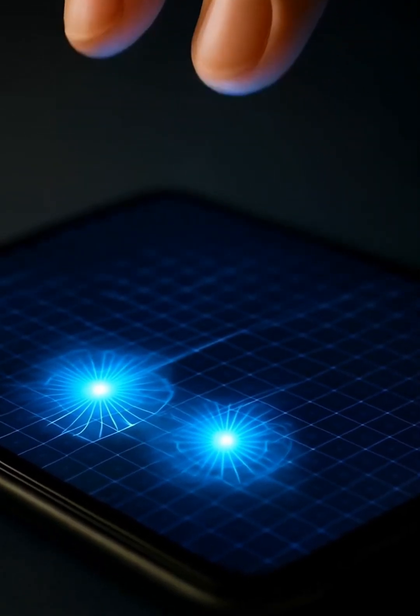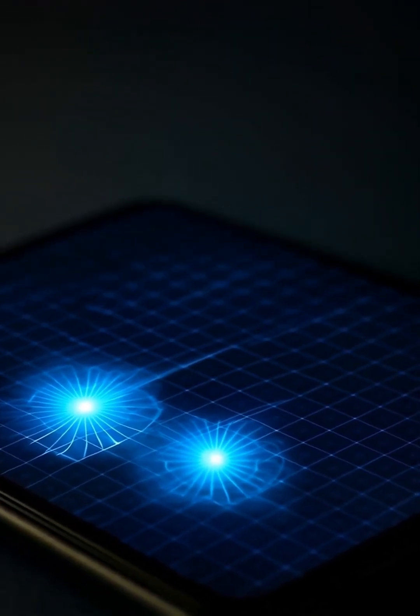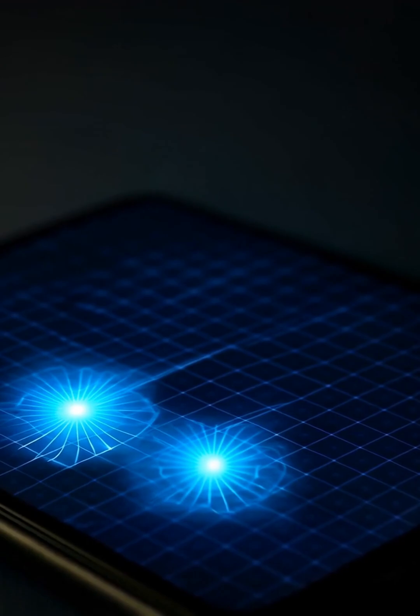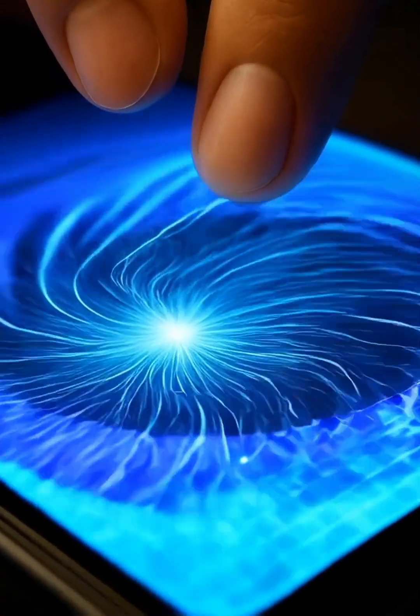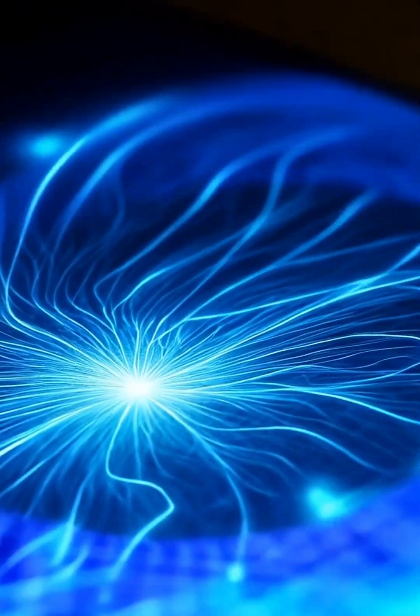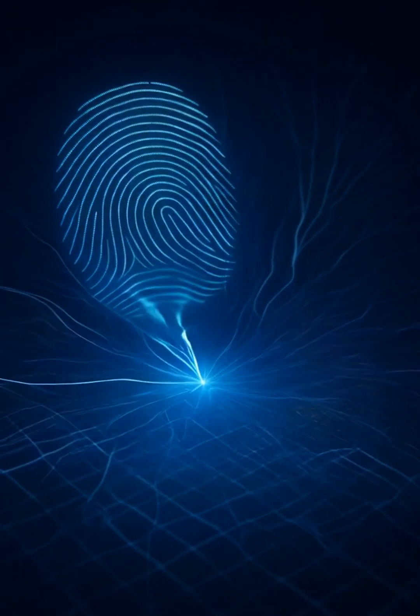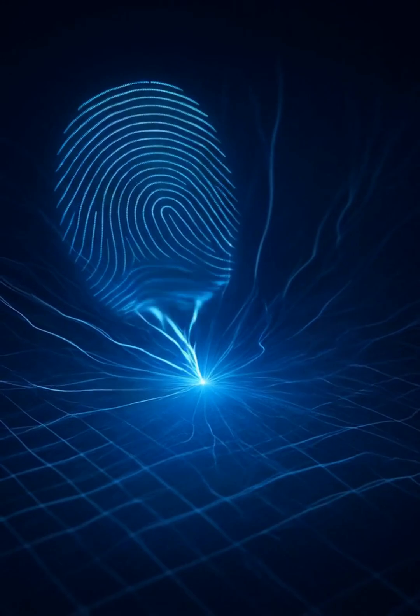Capacitive touchscreens are so precise they can detect not only a single touch but multiple points at once. That's how multi-touch gestures like zooming in or rotating an image are possible. And it's all thanks to that engineered dance between human biology and electric fields.